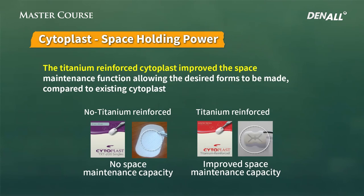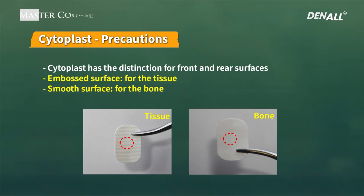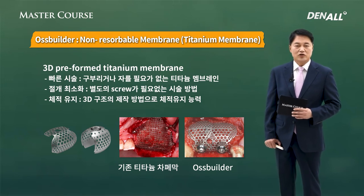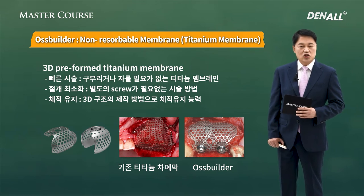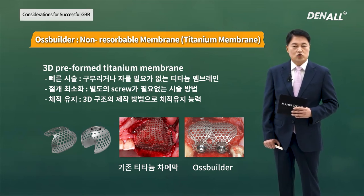Non-resorbable cytoplast can be divided into two — one has titanium and the other doesn't. The one with titanium can maintain space better, however it is slightly more expensive. When using cytoplast, the embossed surface needs to be towards the tissue and the smooth surface needs to be towards the bone, as the embossed surface stabilizes the wound. Osbuilder is a non-resorbable 3D customized titanium membrane that doesn't require bending or cutting for space maintenance.